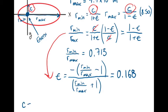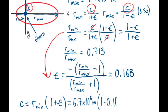Now we have c equals rmin times 1 plus the eccentricity. That's going to be 6.7 times 10 to the sixth meters times 1 plus 0.168, for a final distance of 7.826 times 10 to the sixth meters.